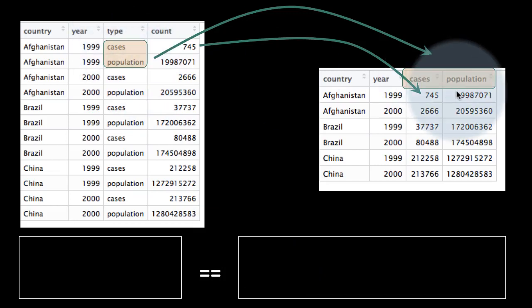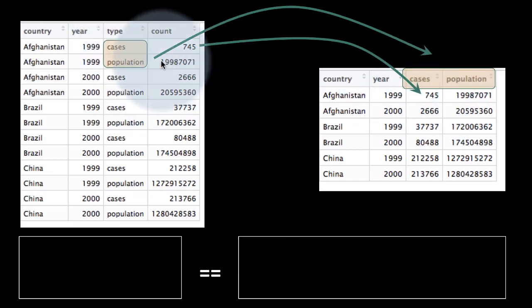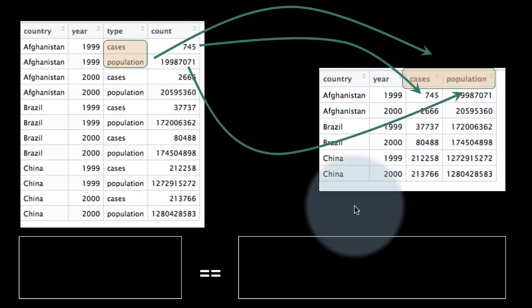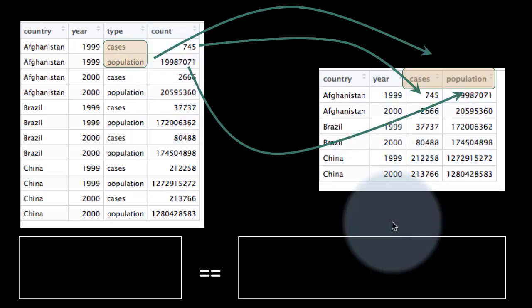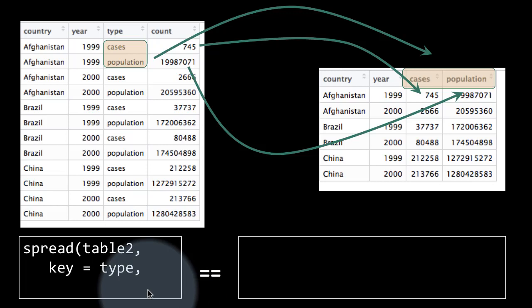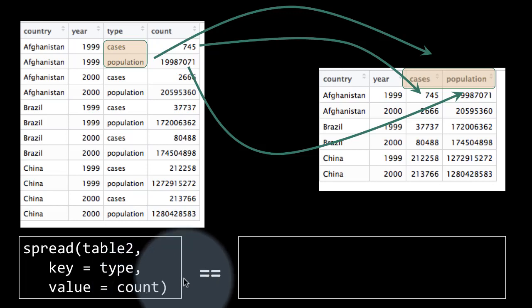So cases and population have become the column names. The individual values of cases go into one column and the values of population go into that other column. You can say spread(table2, key = type, value = count). So you're saying the name of the new columns is going to come from the column called type, and the values for those two new columns are going to come from the column called count.